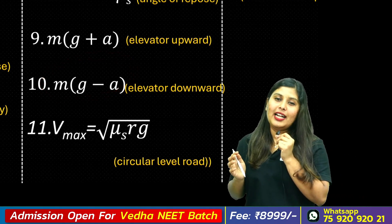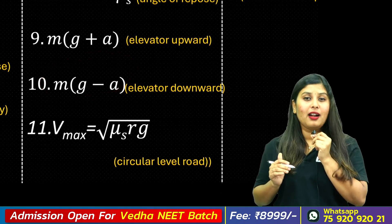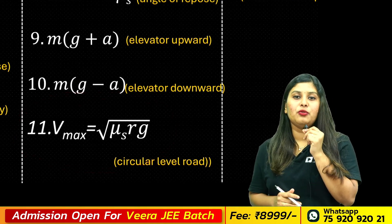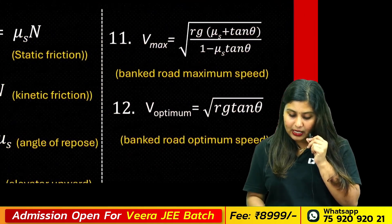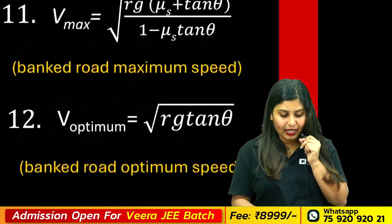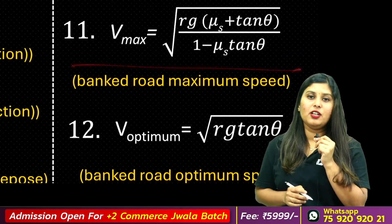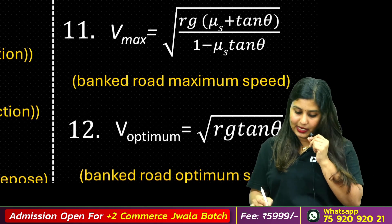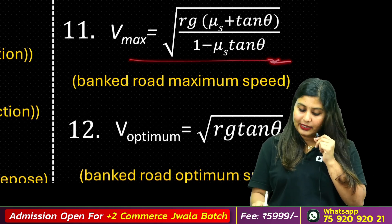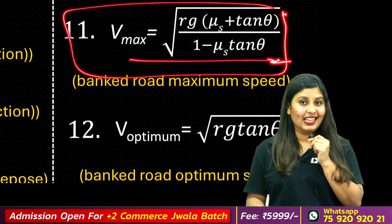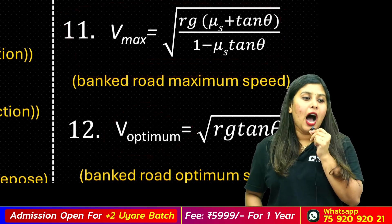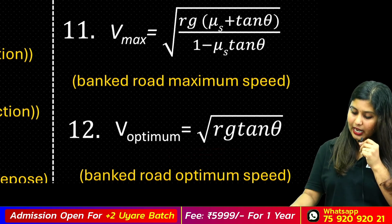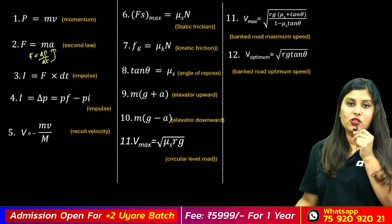The most important equations in Laws of Motion relate to maximum speed. For a flat road: Vmax equals root of mu_s R G. For a banked road: Vmax equals root of RG times (mu_s plus tan theta) divided by (1 minus mu_s tan theta). For a banked road without friction: Vopt equals root of RG tan theta.